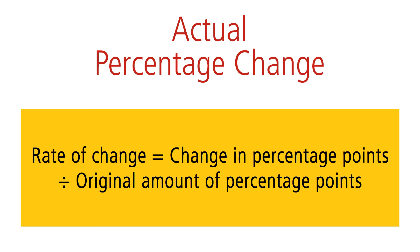Rate of change equals change in percentage points divided by the original amount of percentage points. To illustrate, the change in percentage points is 4 and the original amount of the percentage points is 40. Therefore, rate of change equals 4 divided by 40 equals 0.10 or 10% increase in market share.